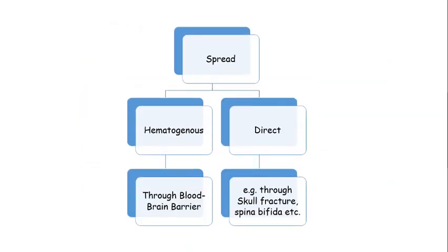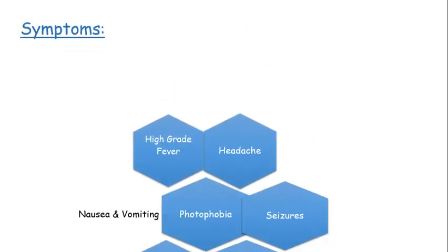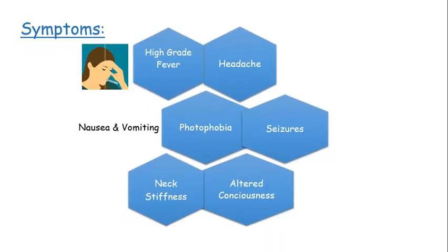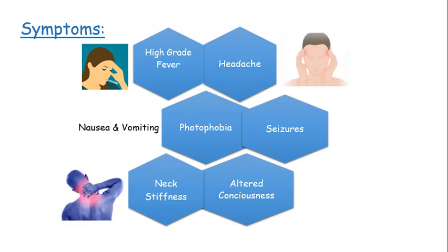Spread is either hematogenous or direct. Hematogenous spread occurs through the blood-brain barrier, whereas direct spread occurs through a skull fracture or spina bifida.